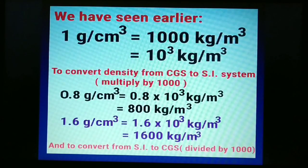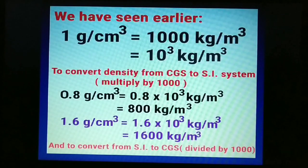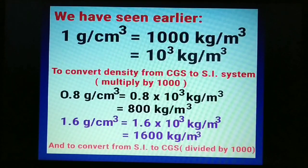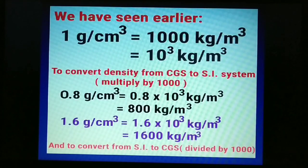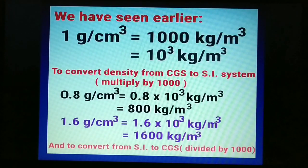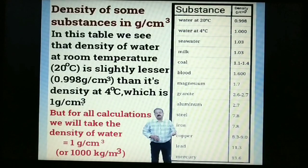Recall: 1 gram per centimetre cube = 1000 kg per metre cube. To convert density from CGS to SI, multiply by 1000. So 0.8 g/cm³ = 800 kg/m³, and 1.6 g/cm³ = 1600 kg/m³. To convert from SI to CGS, divide by 1000. A table showing density of some common substances in gram per centimetre cube is also provided.